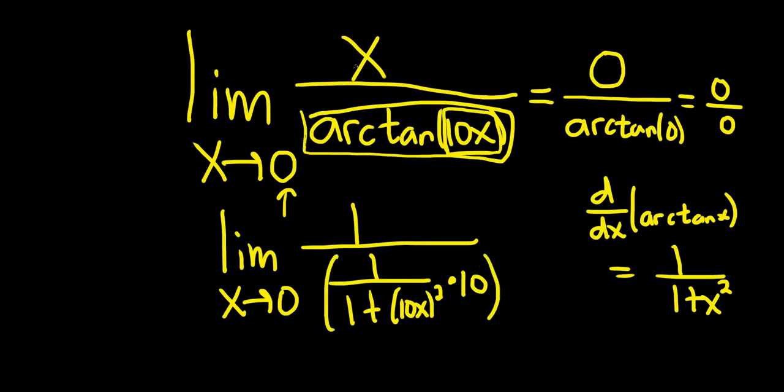So again, we plugged in zero. We got zero over zero. That allows us to use something called L'Hopital's rule, which basically means we can take the derivative of each piece. The derivative of x is one. The derivative of the bottom piece is here.